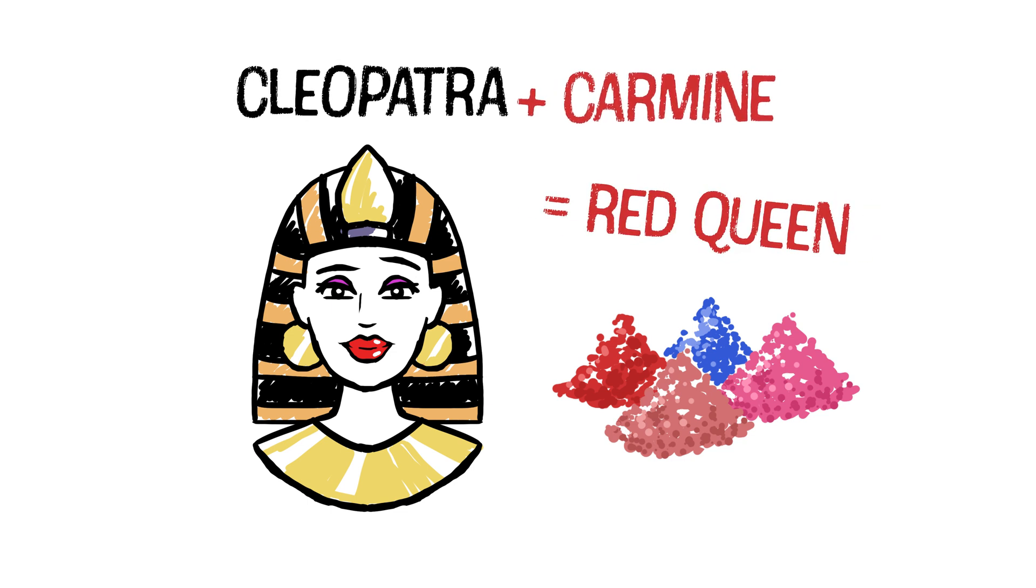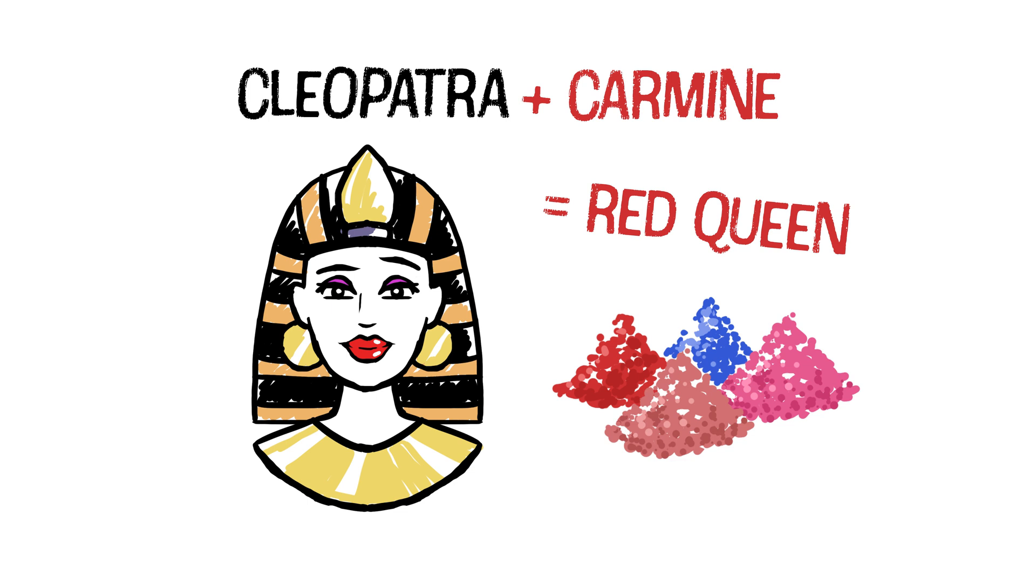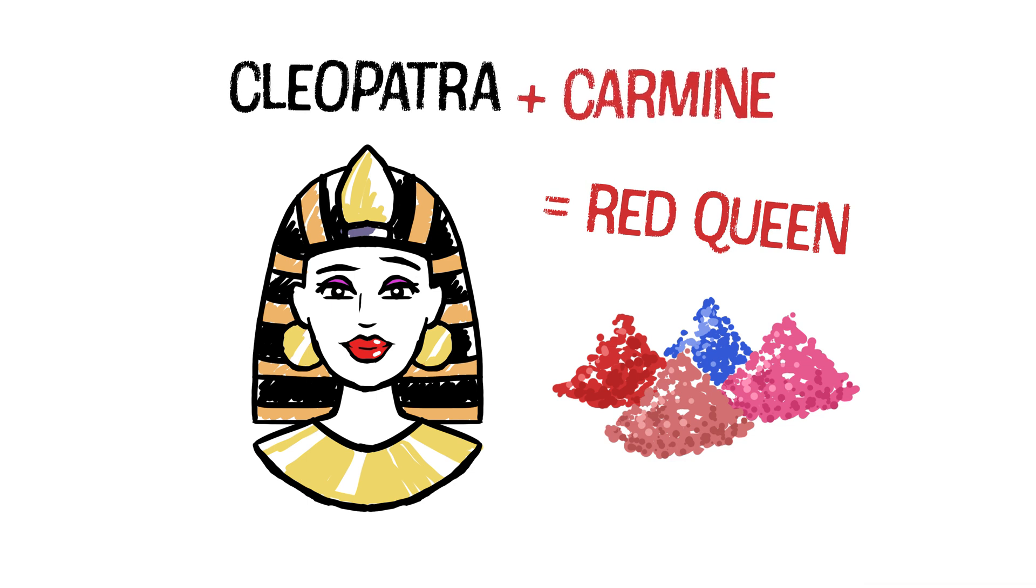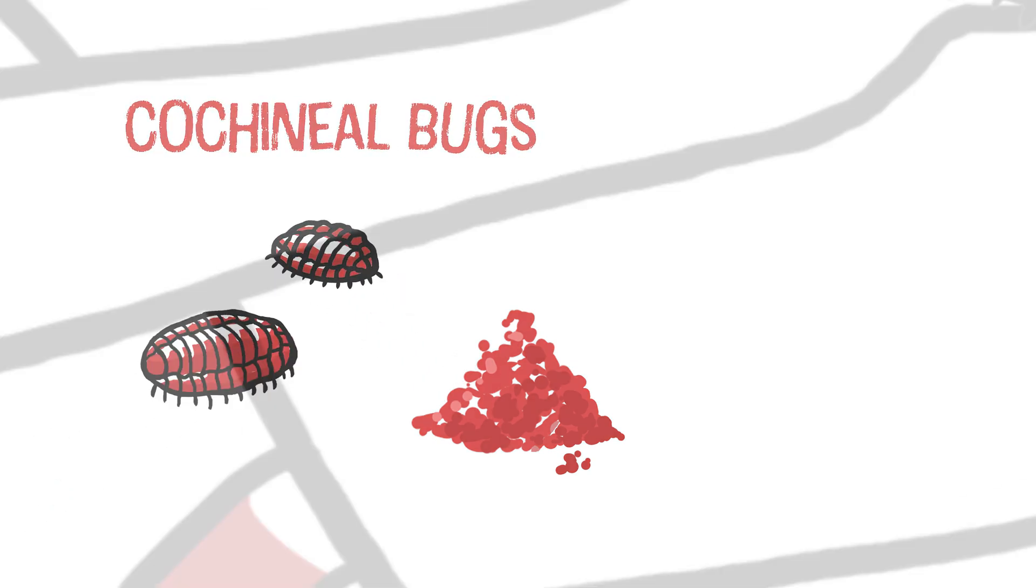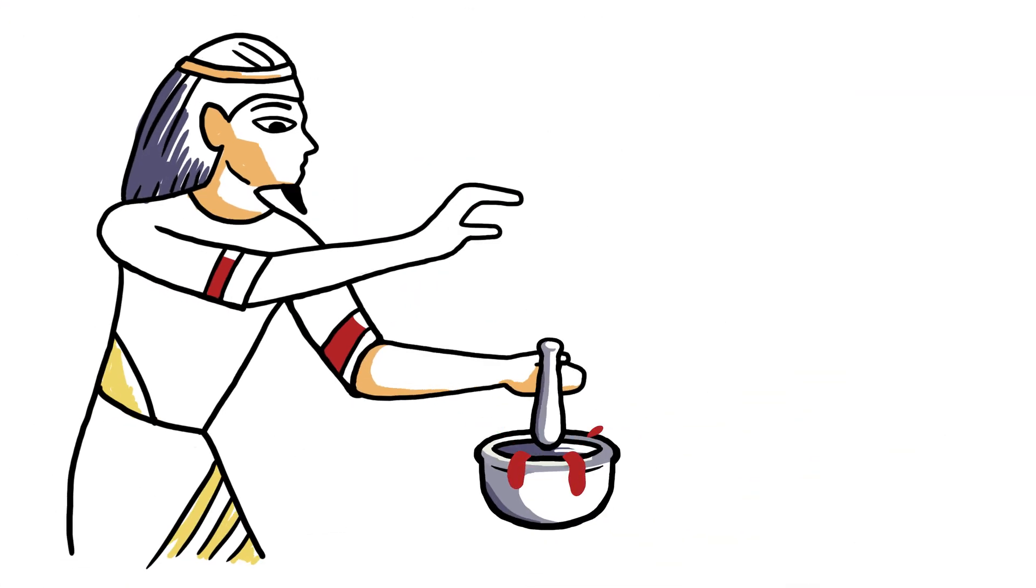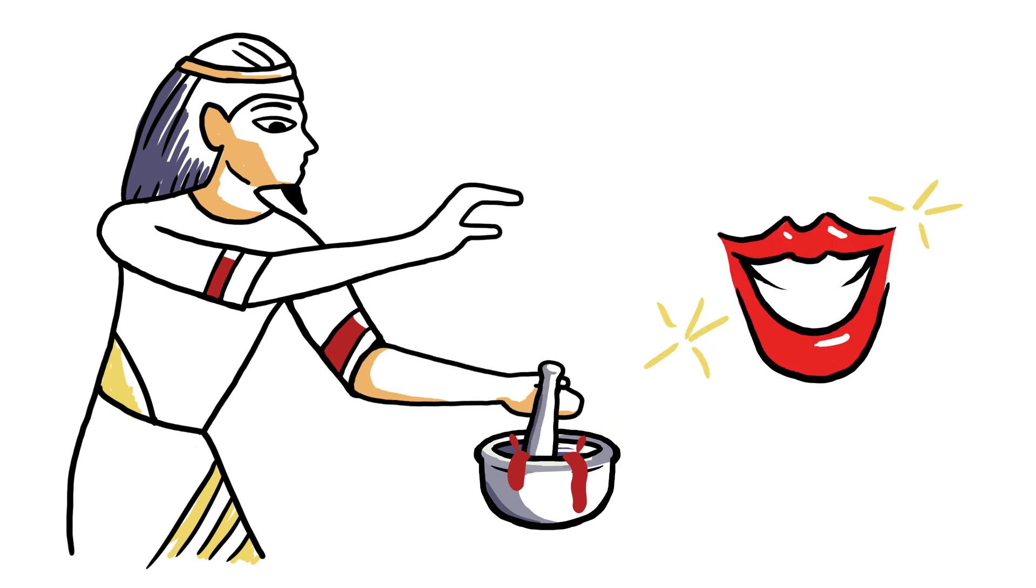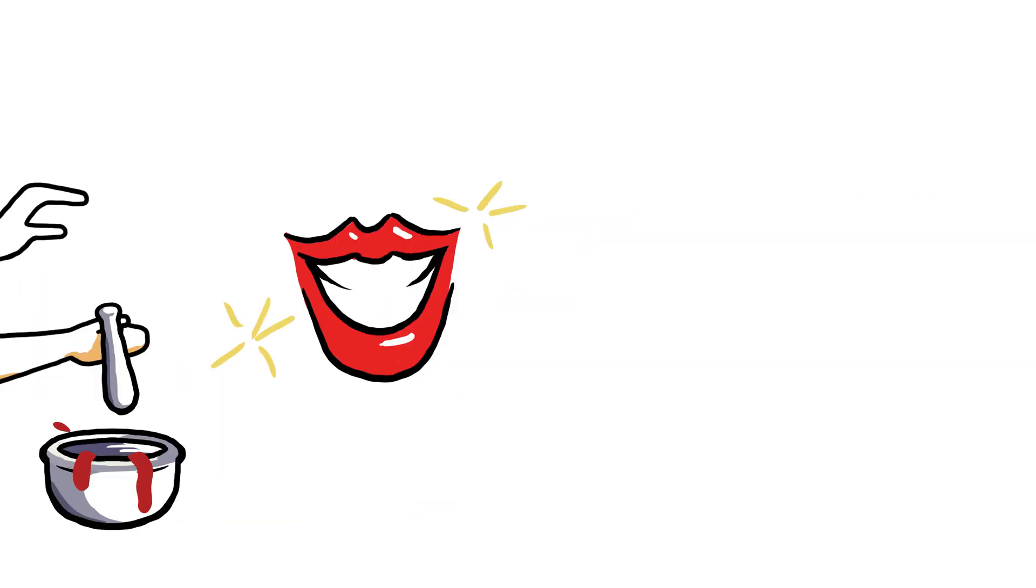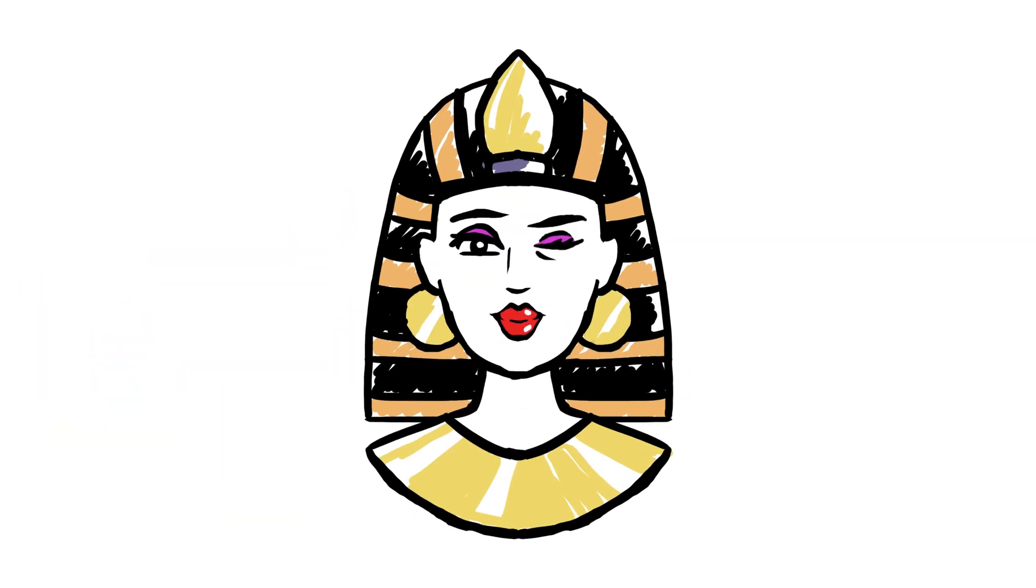What's carmine, you ask? Okay, this is kinda weird, but also kinda awesome. Carmine is a deep red pigment made from tiny insects called cochineal bugs. They'd dry the bugs, grind them into powder, and boom, bright red lips. It sounds gross, but it was totally normal back then. And hey, it looked amazing.